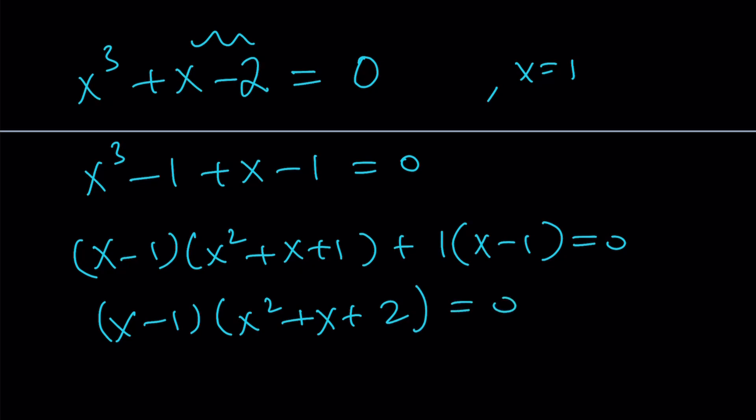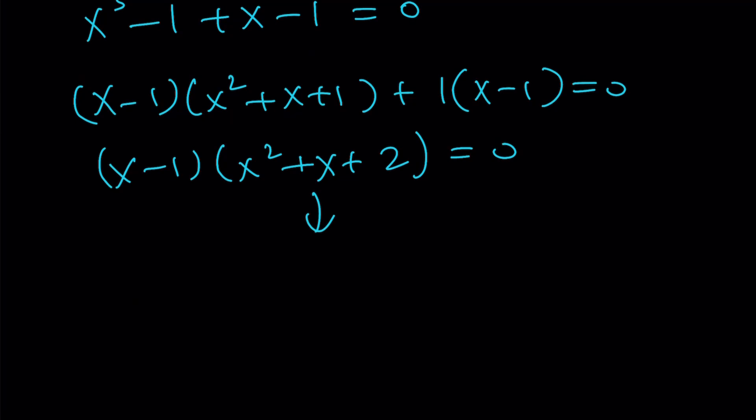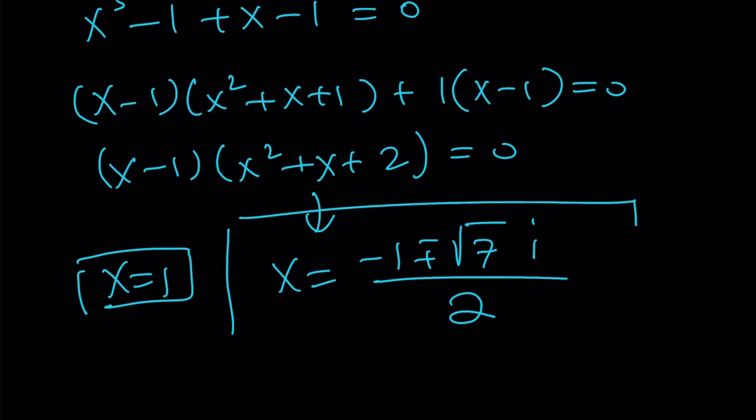So from here, x equals 1, we already knew that. What about the other solutions? They are complex, non-real. x equals negative b plus minus the square root of b squared, 1 minus 4 times 2, which equals 8. 1 minus 8 equals negative 7. That gives us square root of 7 i. I hope this wasn't too fast. Those are going to be the solutions. I'm hoping you can solve the quadratic equation easily with a quadratic formula.